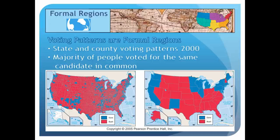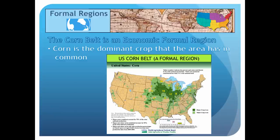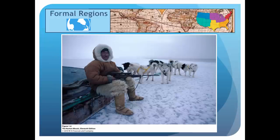We can also prove voting patterns through data — voting patterns are definitely a formal region, examined at different scales such as voters by state and voters by county. Economic traits can also create formal regions. The Corn Belt is an area of the U.S. where corn is the dominant crop grown, provable using USDA data. Formal regions can include multiple shared traits, as seen with an Inuit hunter and dog sled team, where the clothing, transportation, and hunting livelihood all reflect common characteristics.